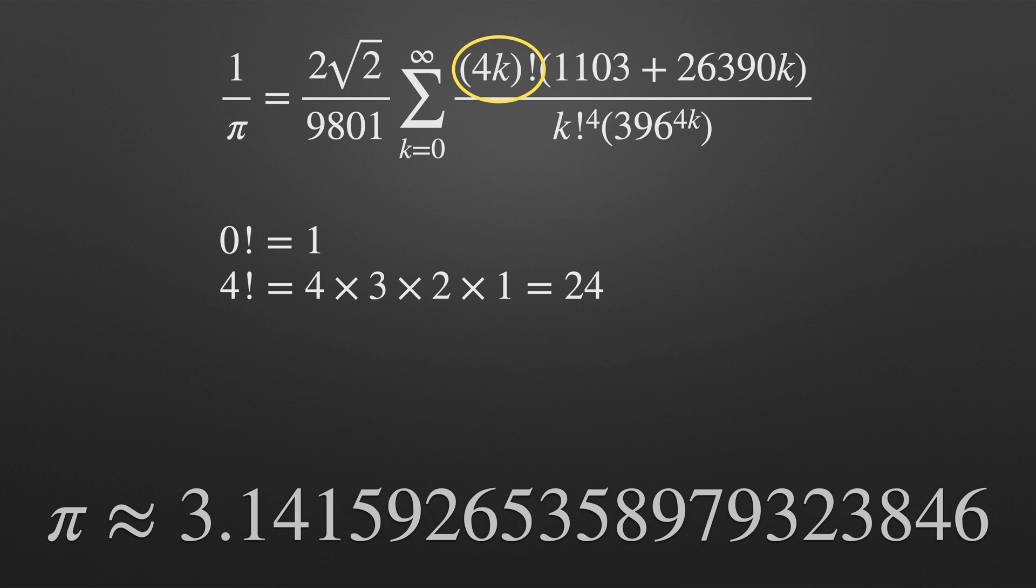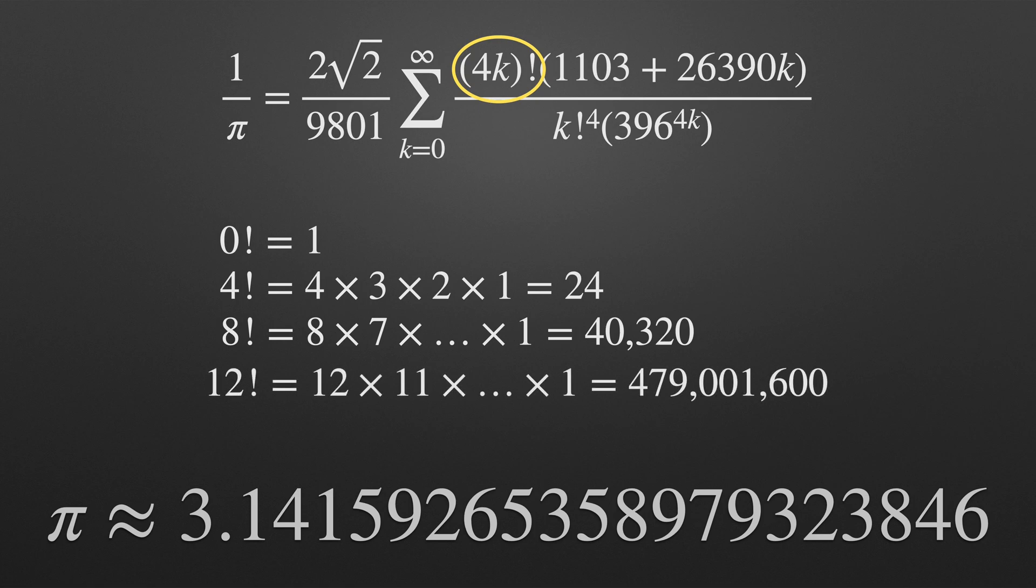With k at 1 we get 4 factorial which is 4 times 3 times 2 times 1 which is 24. Okay seeing a pattern here. With k at 2 we get 8 factorial which is 8 times 7 times 6 and so on down to 1 totaling 40,320.